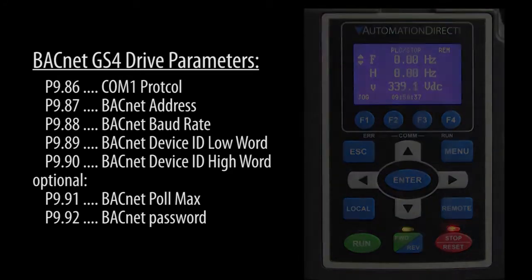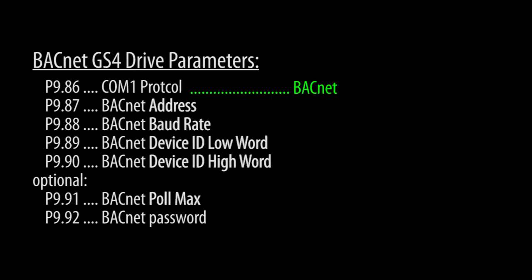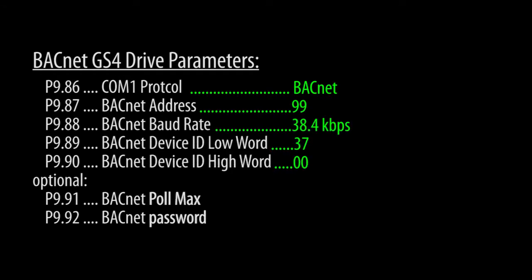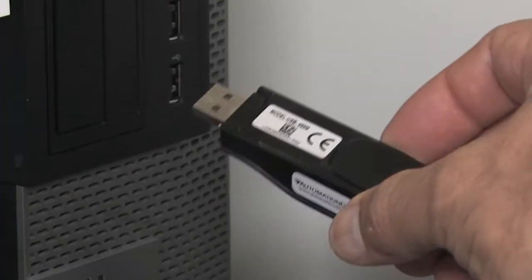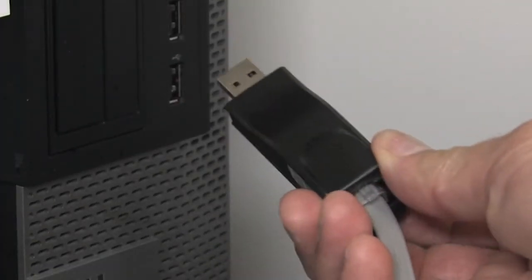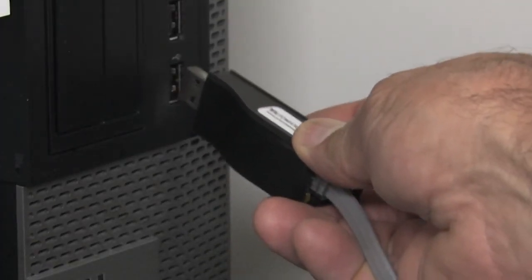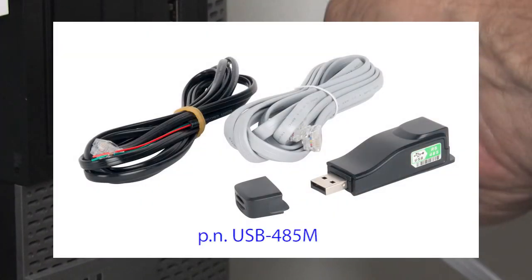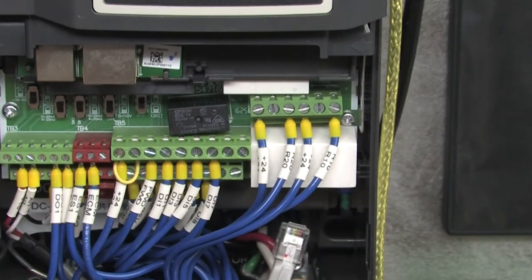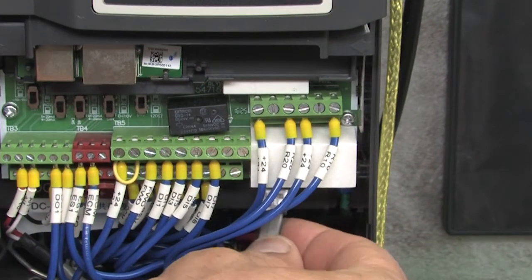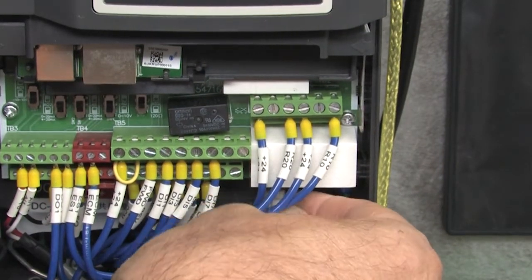Now that we've switched the COM port to BACnet and configured it for our network, any BACnet controller on that network can now talk to our device. Let's do an example. I'll plug my USB to 485 converter into my PC and plug the other end of the cable into the drive we just configured for BACnet.